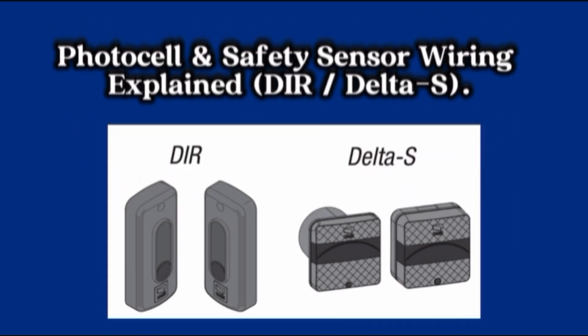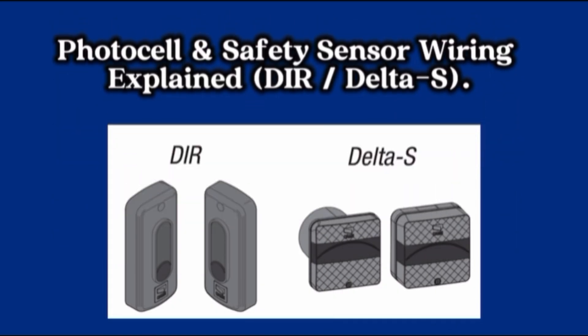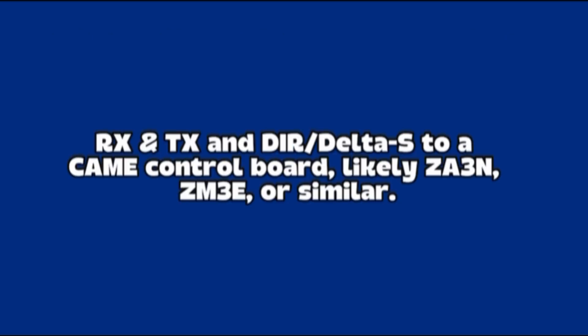Photo cell and safety sensor wiring explained. Djar/delta S. Rx and Tx and DIR/delta S to A. Came control board likely ZA3N, ZM3E or similar.